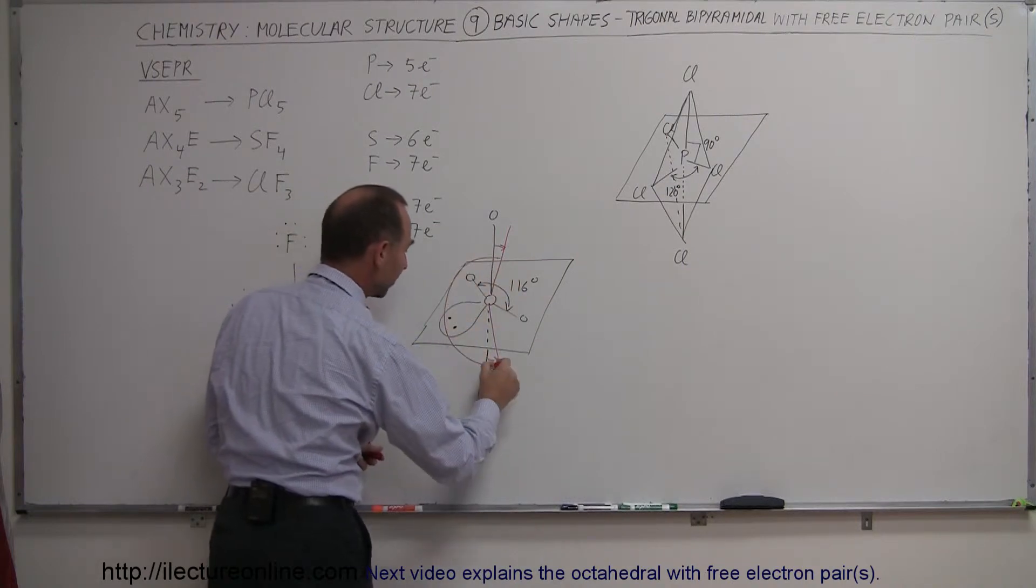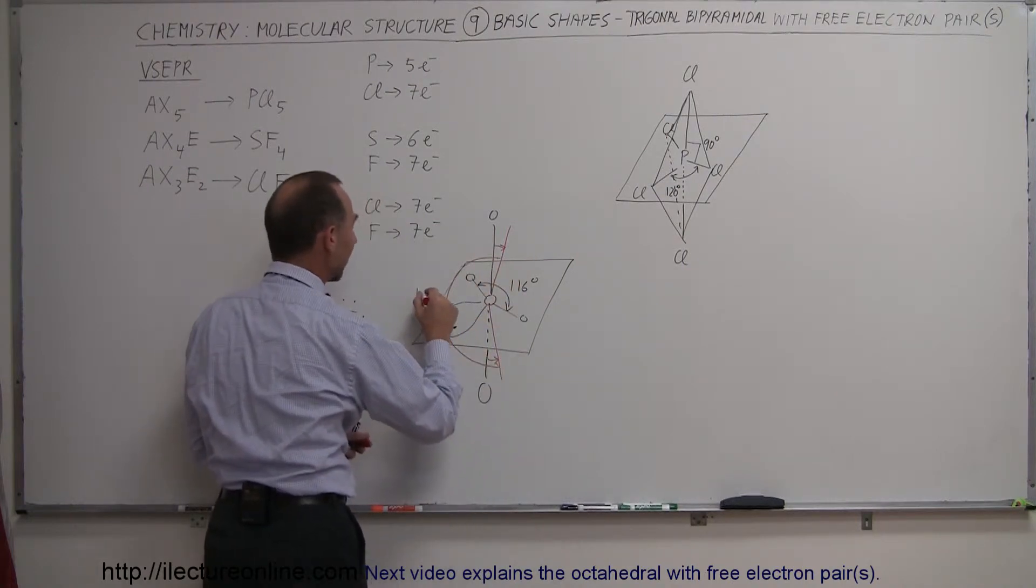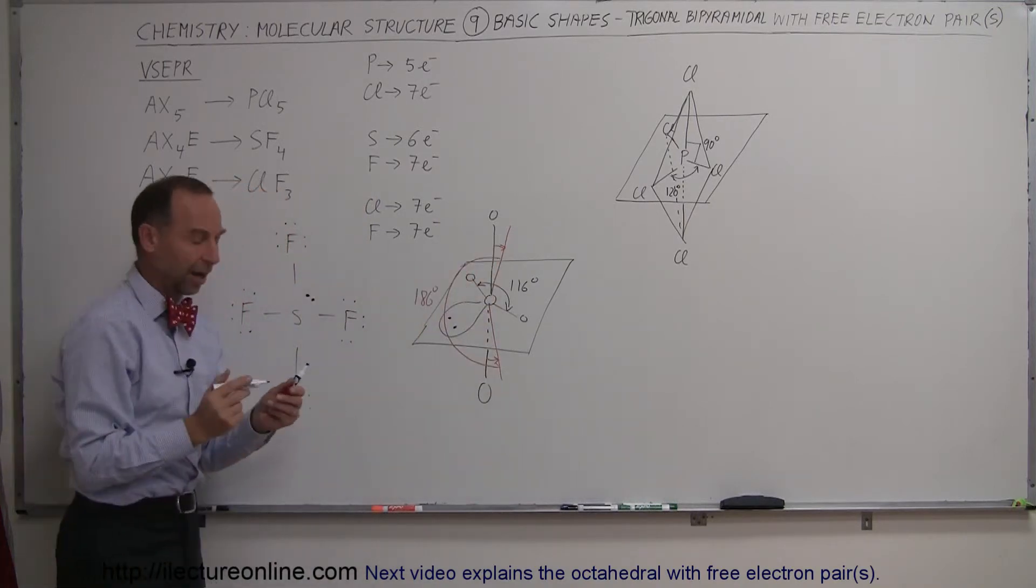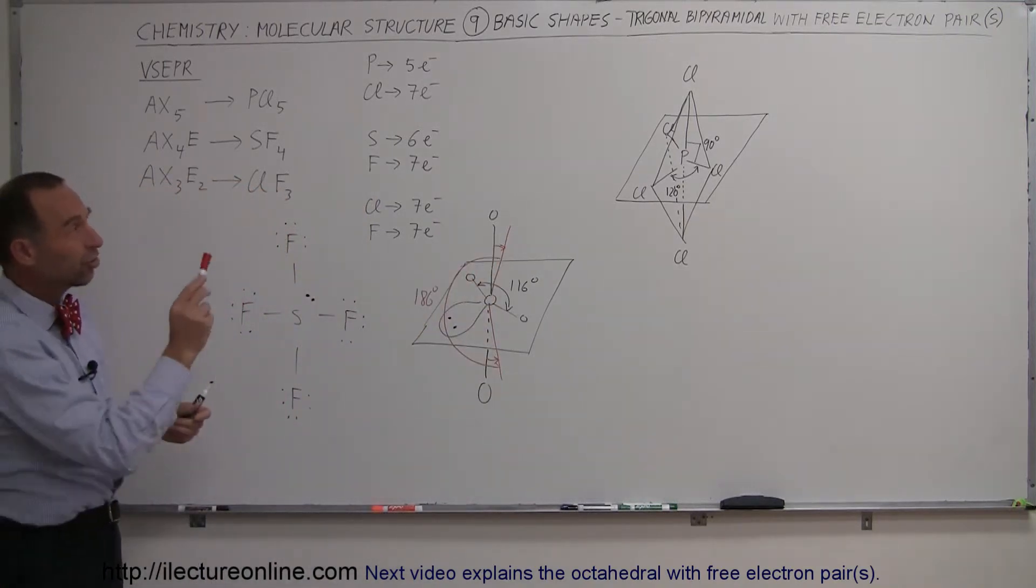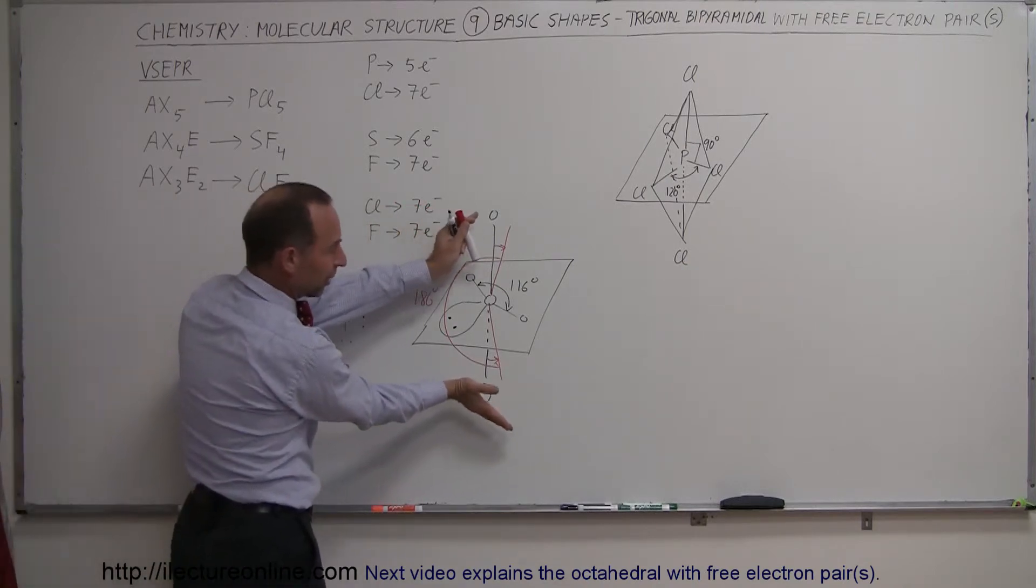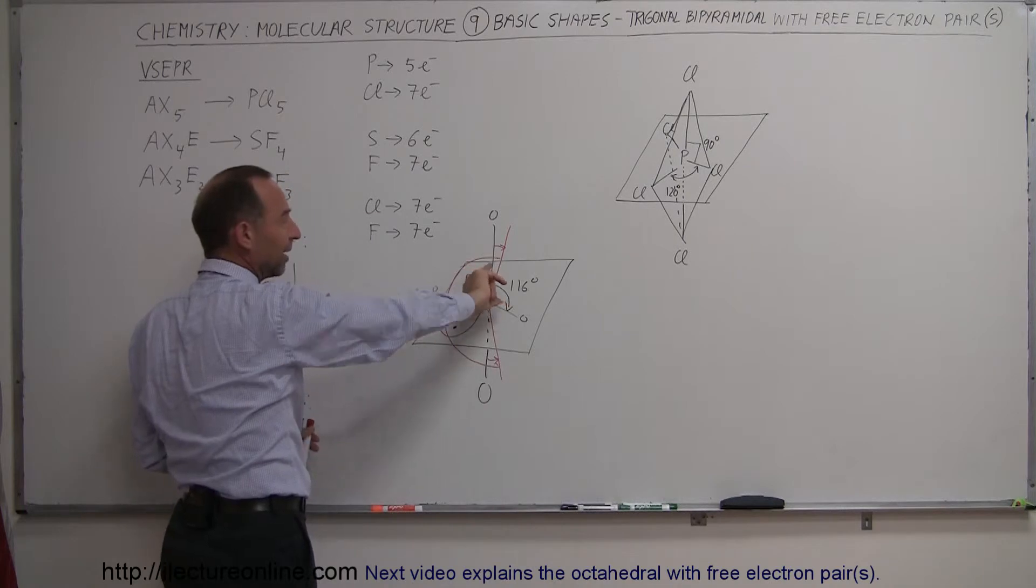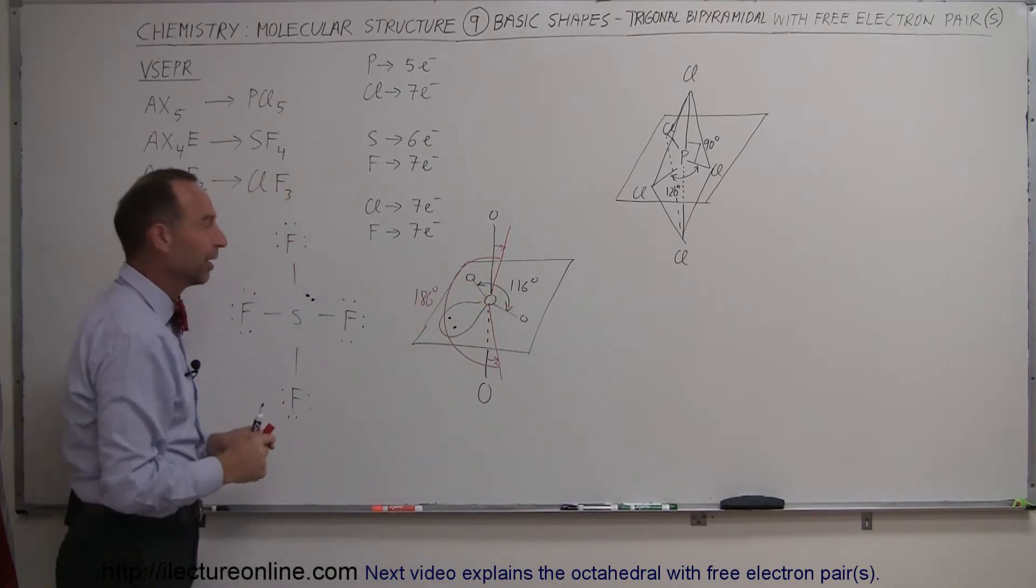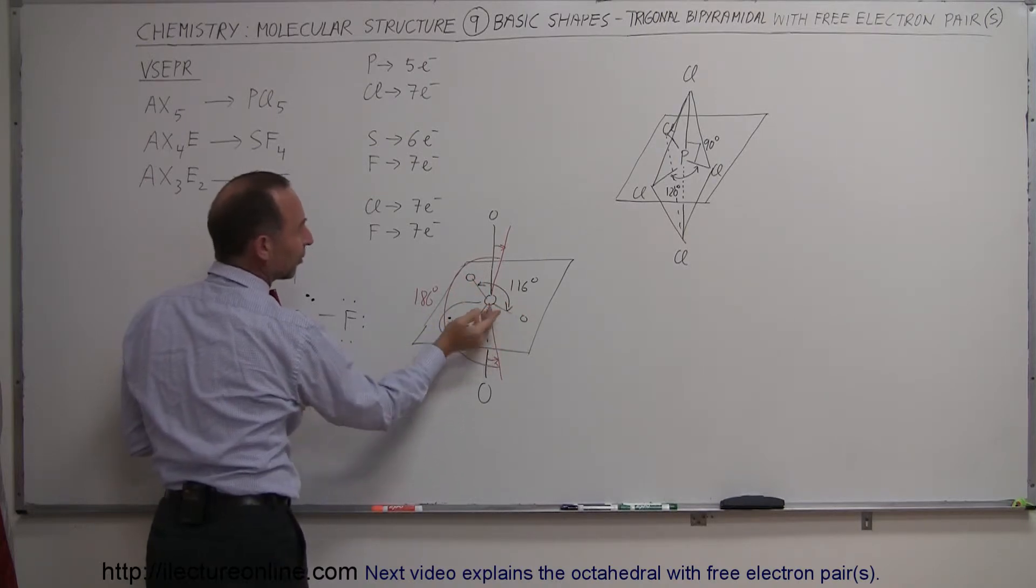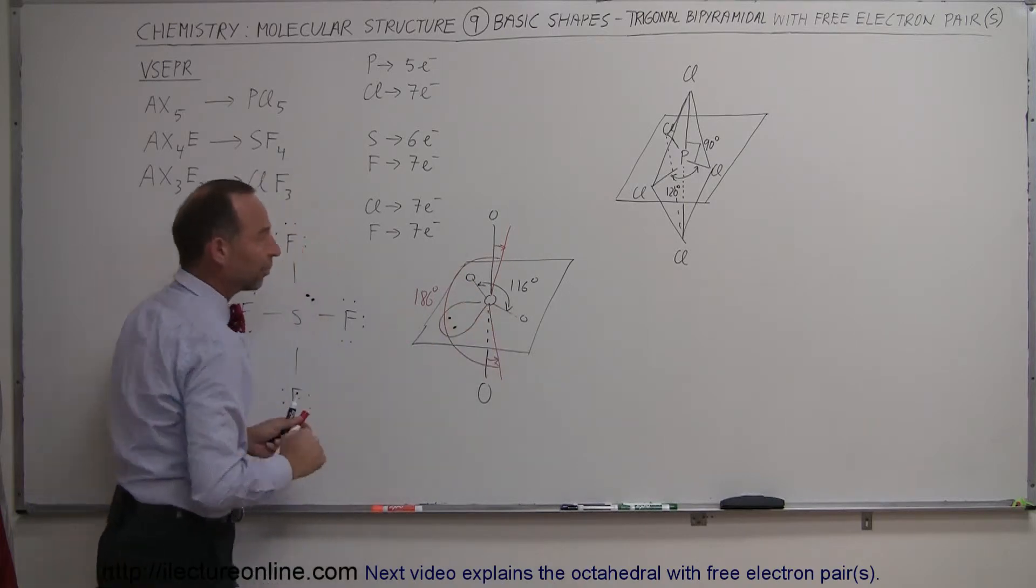So it's kind of pushed off in such a way that this new bond angle here, instead of being 180 degrees, it's now 186 degrees, so about an extra 3 degrees on each side. So it still has the basic shape of a trigonal bipyramidal, except the pyramid is now a little bit lopsided in this direction, and the base is no longer perfectly a perfect equilateral triangle. It has a slightly smaller angle between these two atoms, and a little bit bigger angle between the free electrons and those atoms right there.